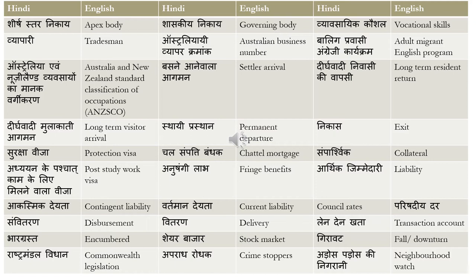'Australiai Vyapar Kramank' is the Australian Business Number, or ABN. If you are working or want to start a small business, you need your ABN generated. 'Balik Pravasi Angrezi Karikram' is the Adult Migrant English Program — Karikram is program, Balik is adult, Pravasi is migrant, and Angrezi is English.